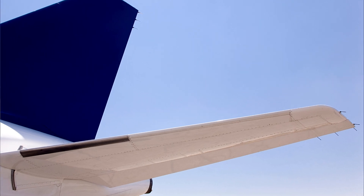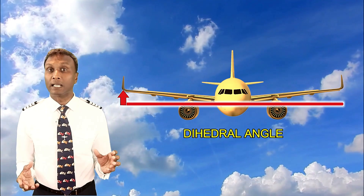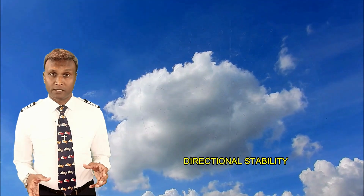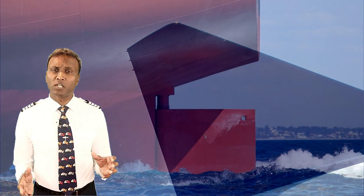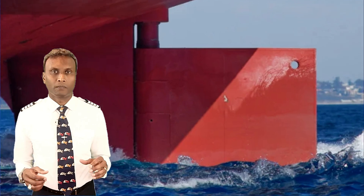For lateral stability, which prevents the plane from rolling side to side, designers may design wings with a slight upward curve called dihedral angle. They may also incorporate wingtip devices to improve lateral stability, especially during turbulent conditions. Directional stability prevents the plane from yawing or swaying off its intended flight path, achieved through the vertical stabilizer and rudder, which help keep the aircraft pointed in the right direction. By tailoring stability characteristics to suit their intended roles, aircraft manufacturers ensure each aircraft type performs optimally in its design tasks.